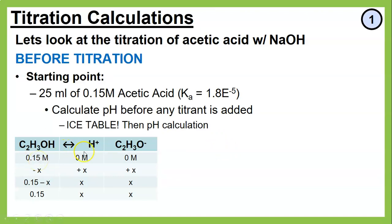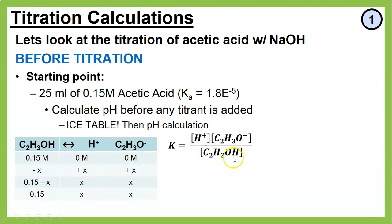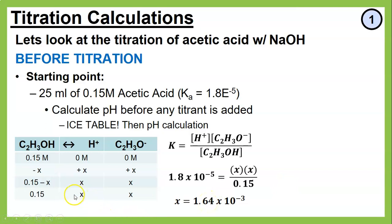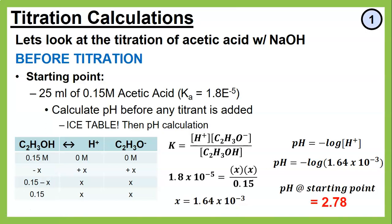Using a 1:1 ratio across the ICE table: minus x, plus x, plus x. Applying the 5% rule, we set up the law of mass action: Ka = x² / 0.15. Solving for x gives the hydrogen ion concentration. Taking the negative log yields a starting pH of 2.78 — that's the first dot on the graph at zero milliliters of NaOH added.